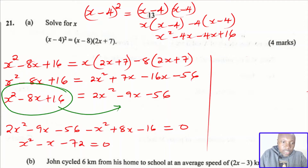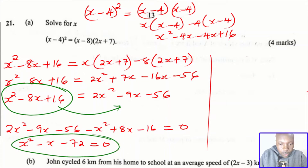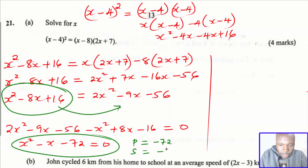This is a quadratic equation. To solve it, we look for two numbers whose product is negative 72 and whose sum is negative 1. Those two numbers are negative 9 and 8.